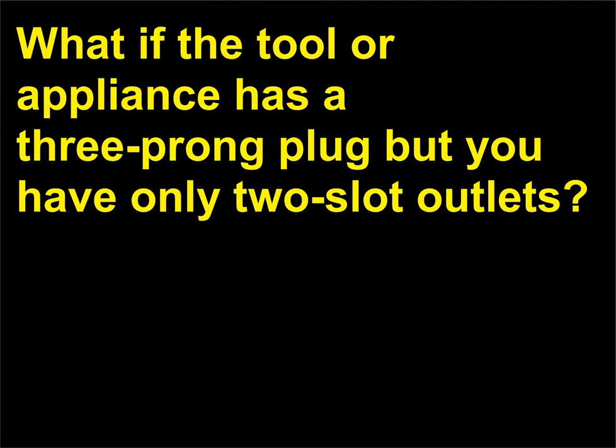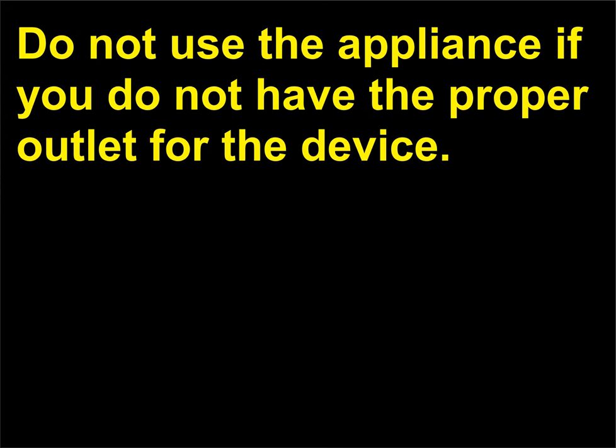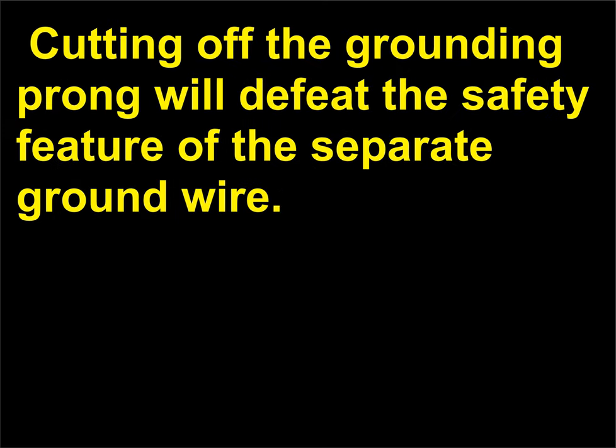What if the tool or appliance has a three-prong plug but you have only two-slot outlets? Do not use the appliance if you do not have the proper outlet for the device. Cutting off the grounding prong will defeat the safety feature of the separate ground wire.